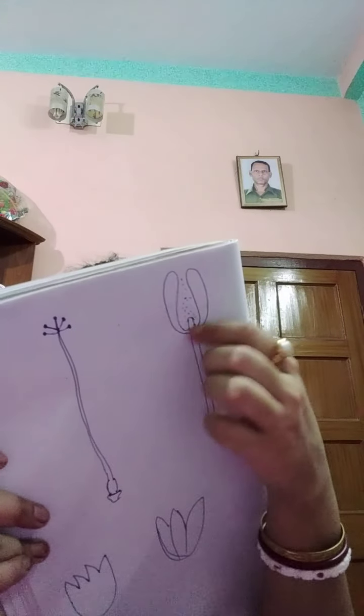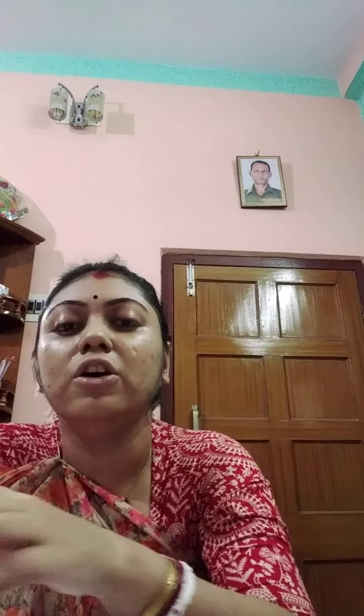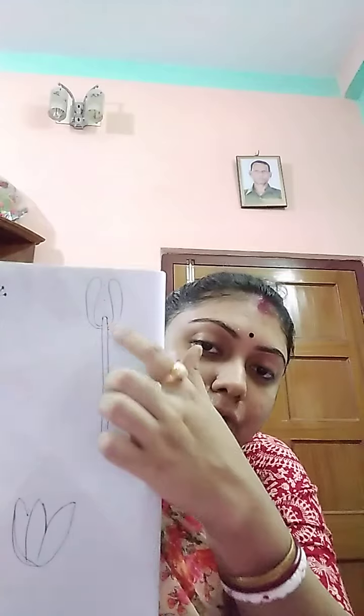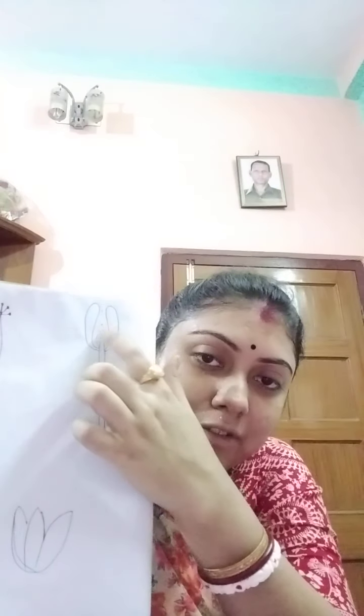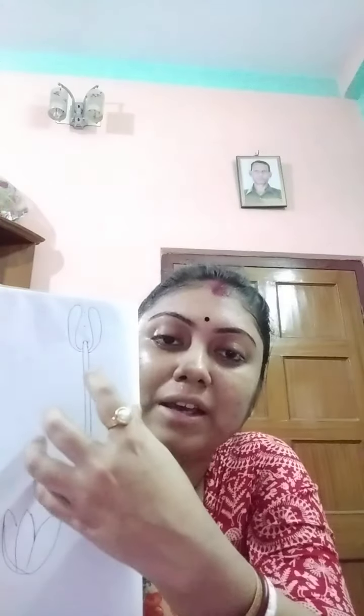The rod-like lower portion of a stamen is known as the filament, and the sac-like pollen-bearing apical portion is known as the anther. The pollen sacs are filled with minute dust-like structures called pollen grains. Together, the stamens make up the androecium.